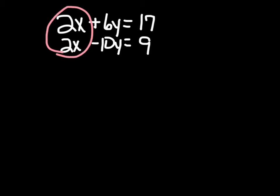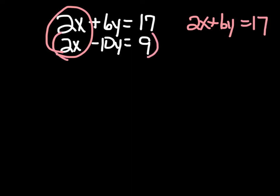They are both 2, but when we put those together, we need one to be positive and one to be negative. So let's leave the first equation the same: 2x plus 6y equals 17. For the second equation, let's multiply the whole equation by negative 1, giving us negative 2x plus 10y equals negative 9.